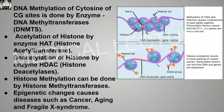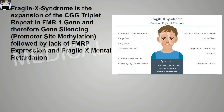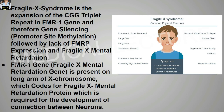Epigenetic changes cause diseases such as cancer, aging, and Fragile X syndrome. Fragile X syndrome is the expansion of the CGG triplet repeat in the FMR1 gene, causing gene silencing followed by lack of FMRP expression and Fragile X mental retardation. The FMR1 gene is present on the long arm of the X chromosome and codes for the Fragile X mental retardation protein, which is required for the development of connections between neurons.